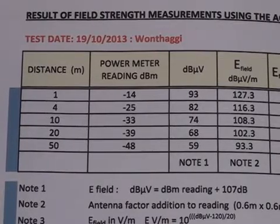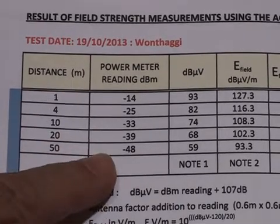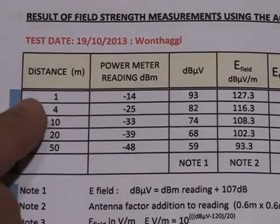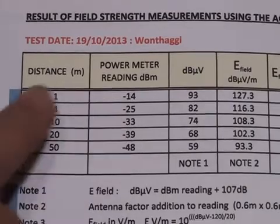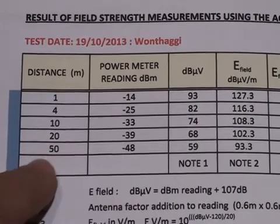Now the measurements we took with the RF PM1 power meter have been tabulated in this table. For example we measured minus 14 dBm at 1 meter, minus 33 at 10 meters, minus 48 dBm at 50.